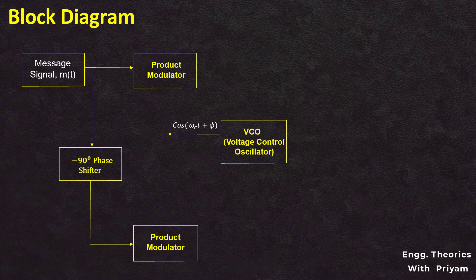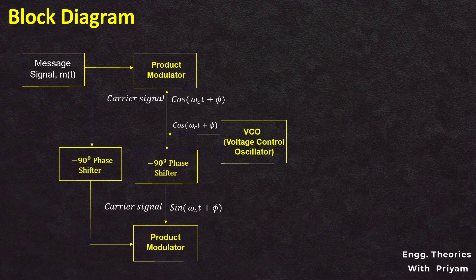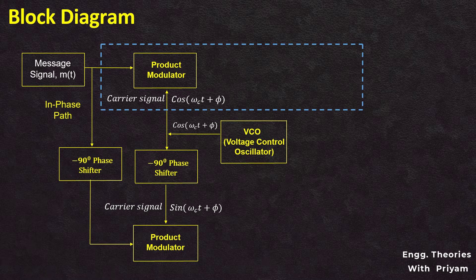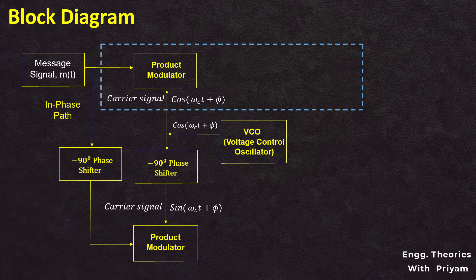The voltage controlled oscillator (VCO) is used to generate the carrier signal. The two carrier signals generated by the VCO are in phase quadrature — 90 degrees out of phase with respect to each other — as one signal is passed through a 90-degree phase shifter. The frequency of the VCO is adjusted to match the carrier frequency. The upper path of the block diagram is the in-phase path, and the lower path is the quadrature path.